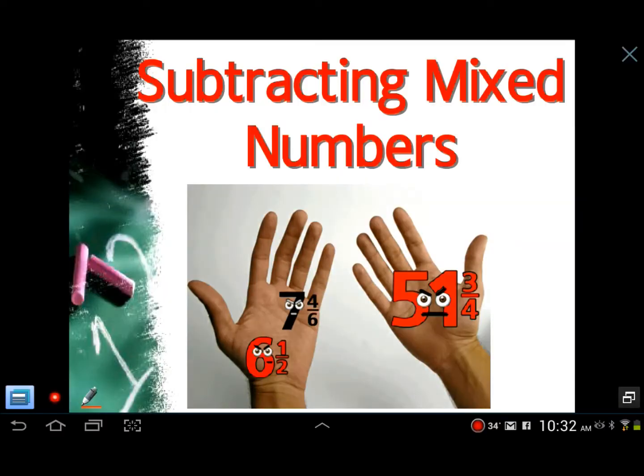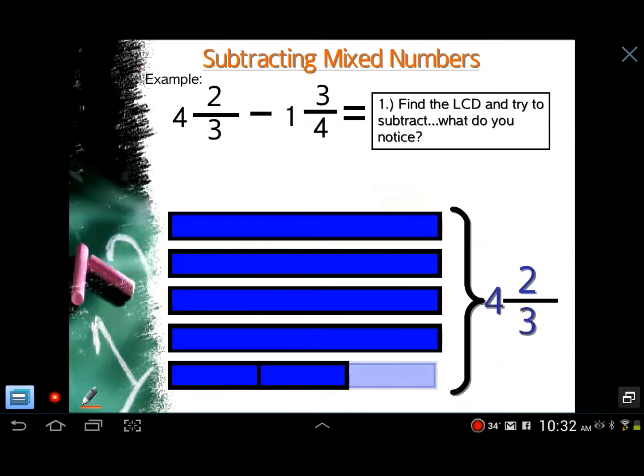Okay, welcome back everybody. This is Mr. Oliver. Here is basically part two of yesterday's lesson on subtracting mixed numbers with borrowing. Now, I'm going to go ahead and start off with an example where we're modeling. And in this example, we have four and two-thirds minus one and three-fourths.